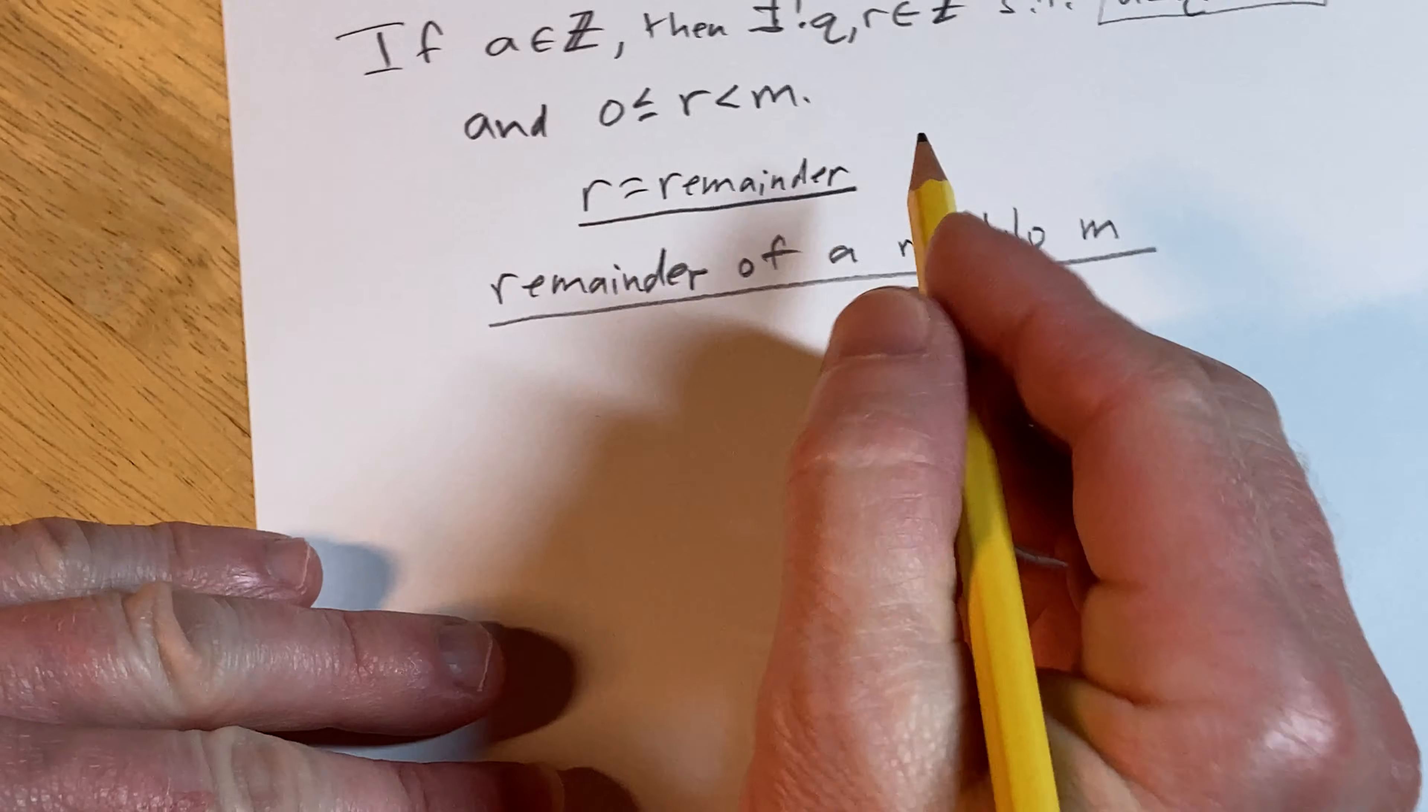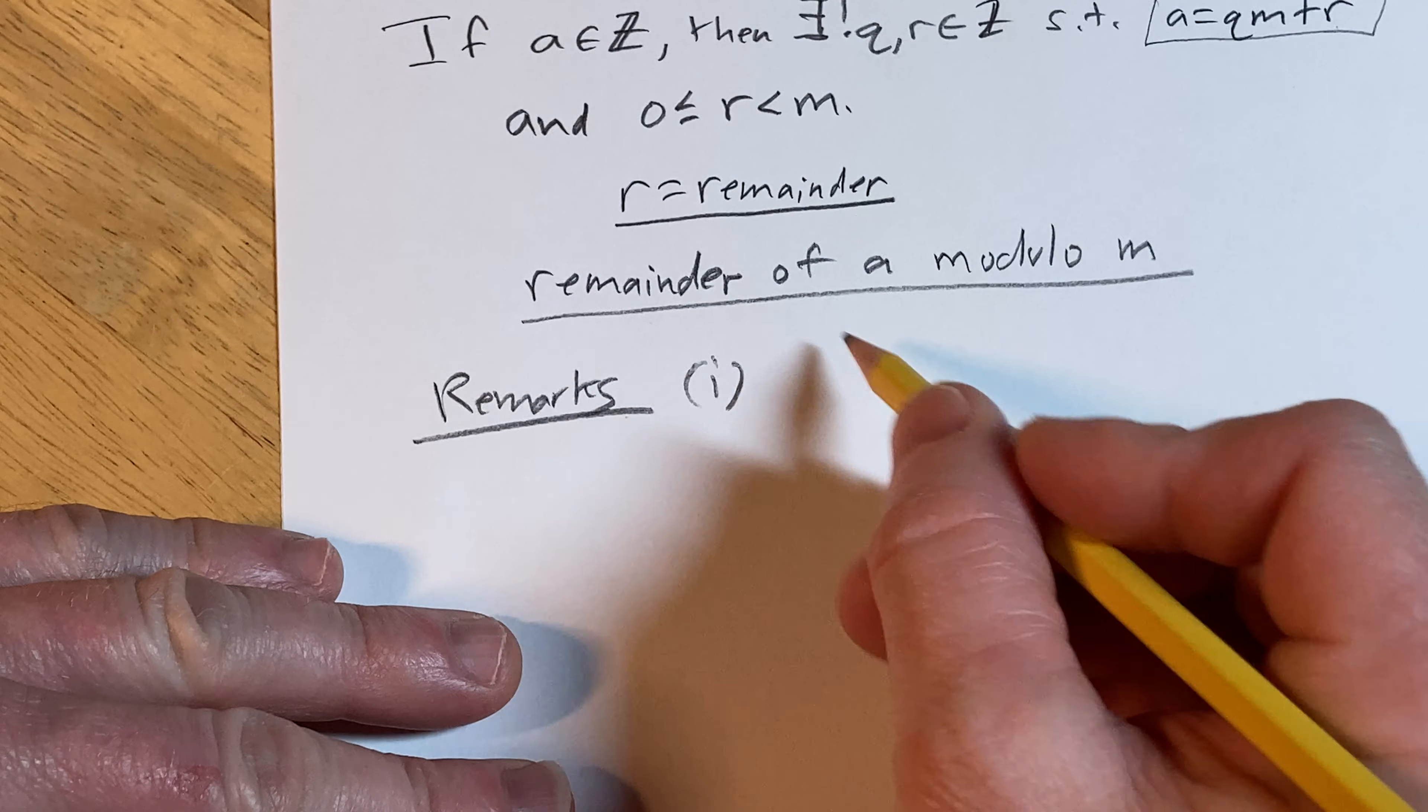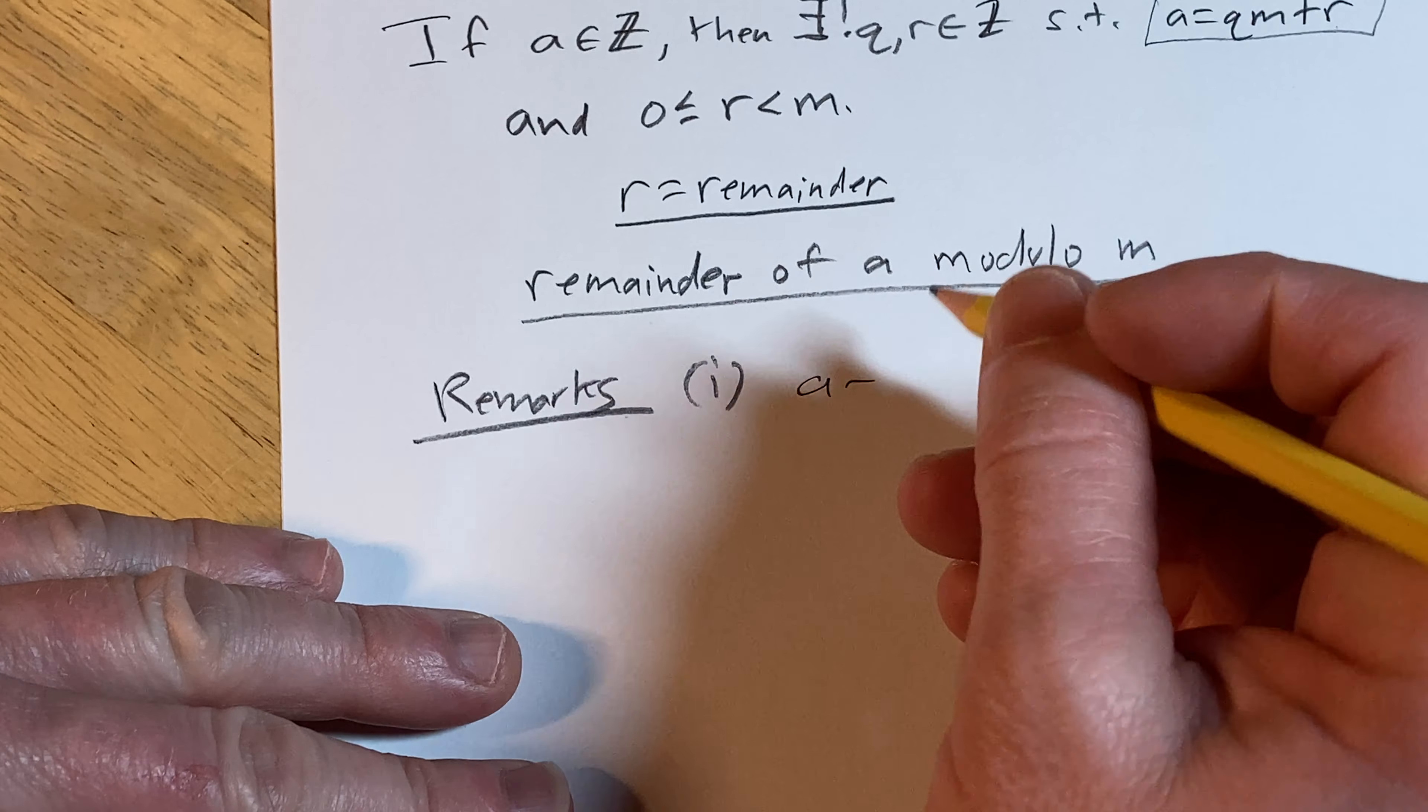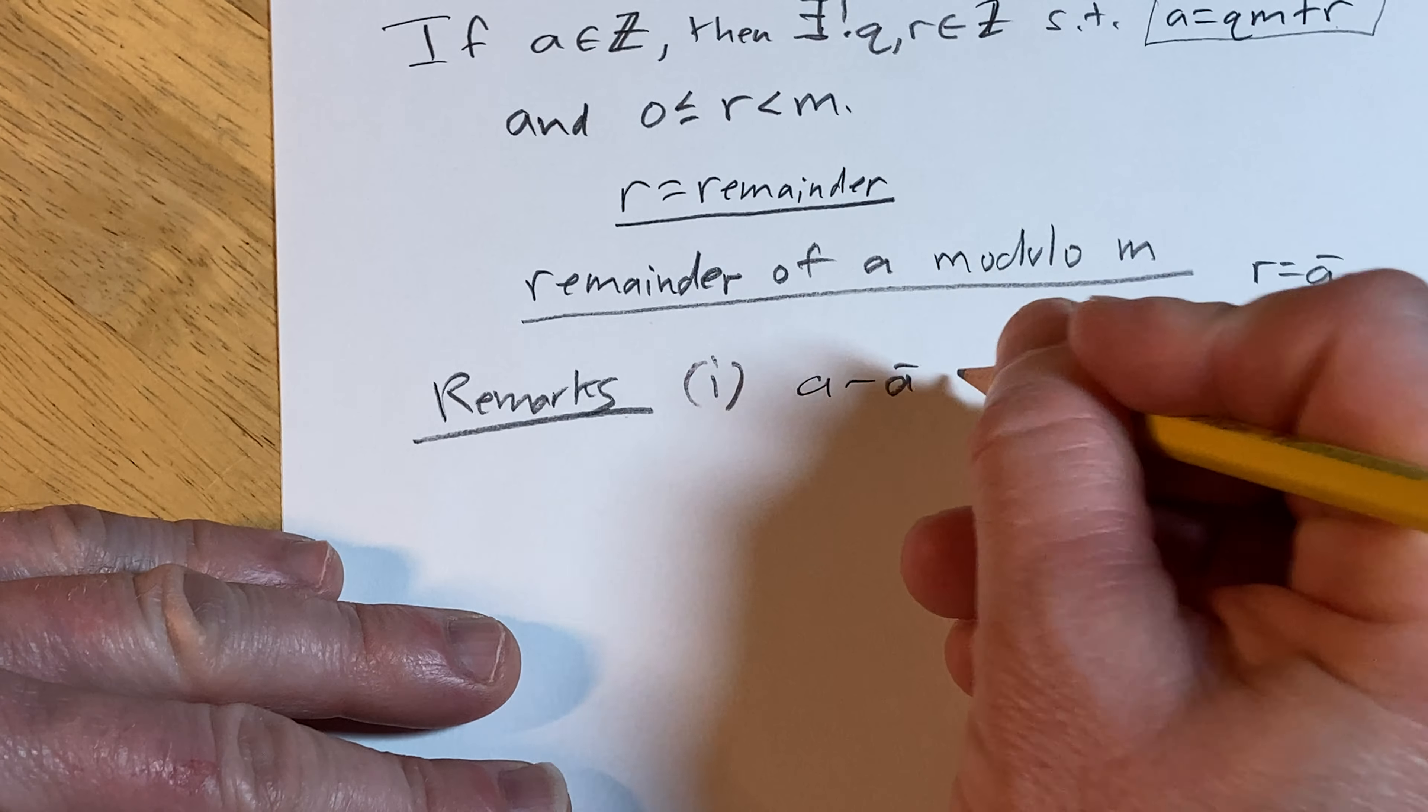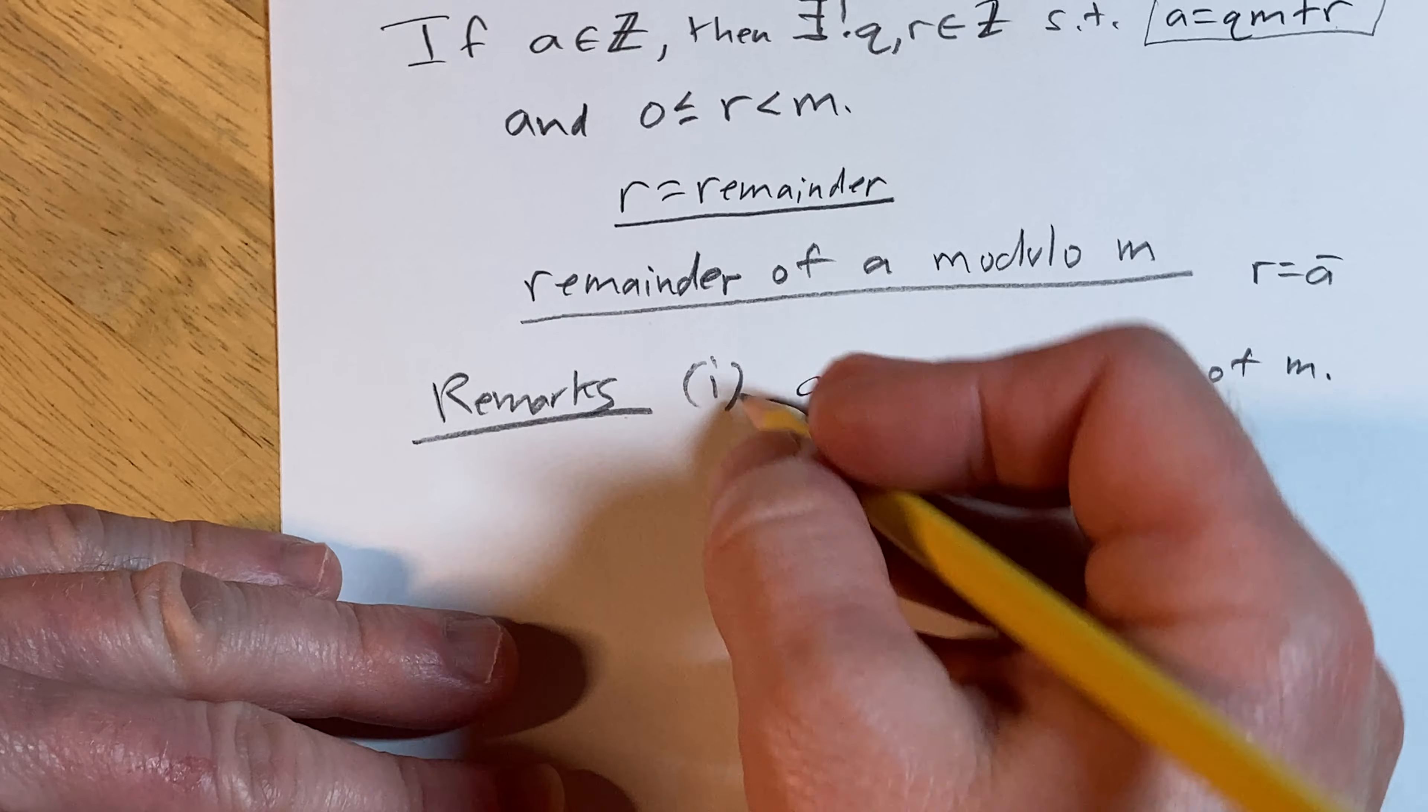A couple remarks. First remark is that if you take A minus R, so the remainder of A modulo M, we can give it notation. I'll call it A bar. So if you look at A minus A bar, this is a multiple of M.